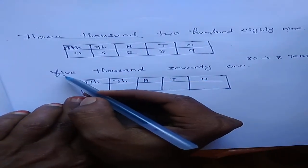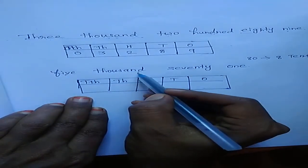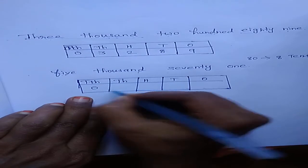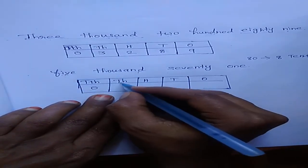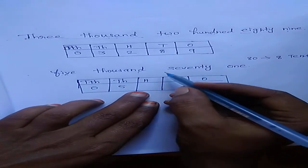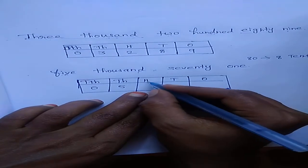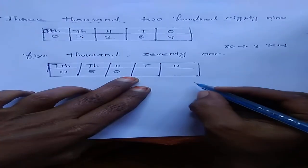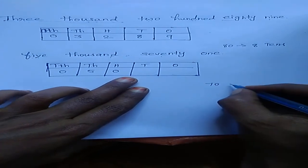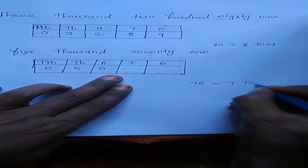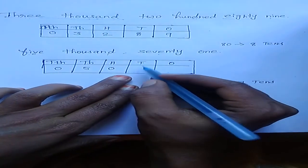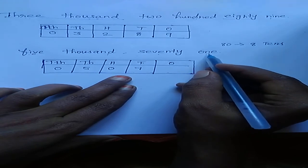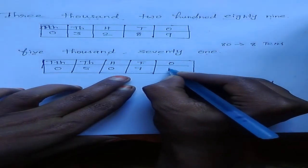Now see the number name: five thousand. So the thousands family is number five — write 5 here. There is no ten-thousands, so that place is empty. Is there any hundreds? No. So hundreds is zero. How many tens? Seventy — that is seven tens, seven tens equal seventy. So write 7 in the tens place. How many ones? Only one. So put 1 in the ones place.